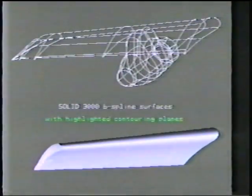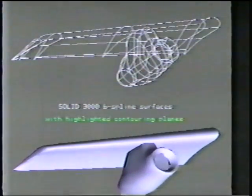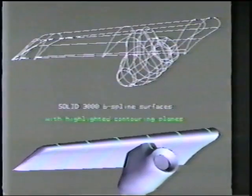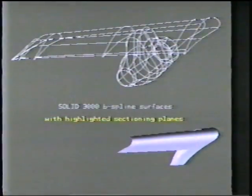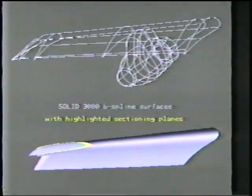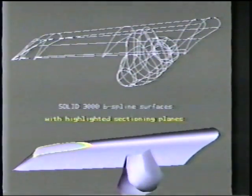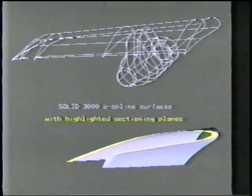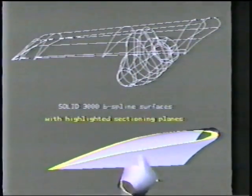Here's a test object of about 100 patches that breaks down into about 4,000 polygons for display. You can see a set of contour planes in green which have been intersected with the object. We also support the idea of sectioning planes — that is, a plane beyond which the object is removed or clipped.